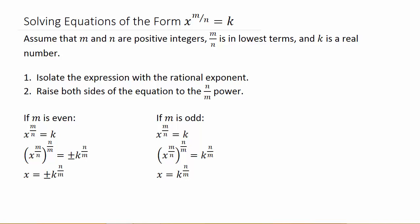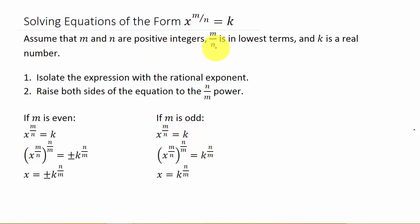In this video we're going to look at solving equations in the form x to the m over n equals k. K is just any number, and our exponent is a fraction. We assume that m and n are positive integers, m over n is in lowest terms, and k is a real number.